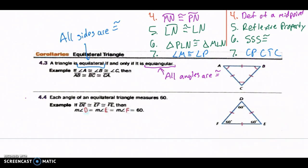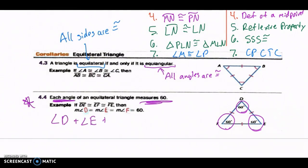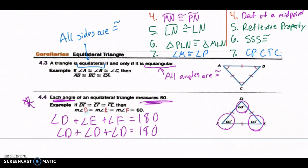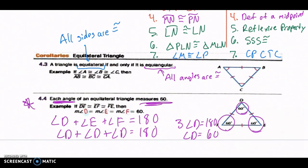Theorem 4.4 states that each angle of an equilateral triangle measures 60 degrees. The reason: if angle D + angle E + angle F = 180 degrees, and all three angles are congruent, we can write angle D + angle D + angle D = 180, so 3·angle D = 180, giving angle D = 60 degrees. That covers all the notes — now we'll move on to examples.